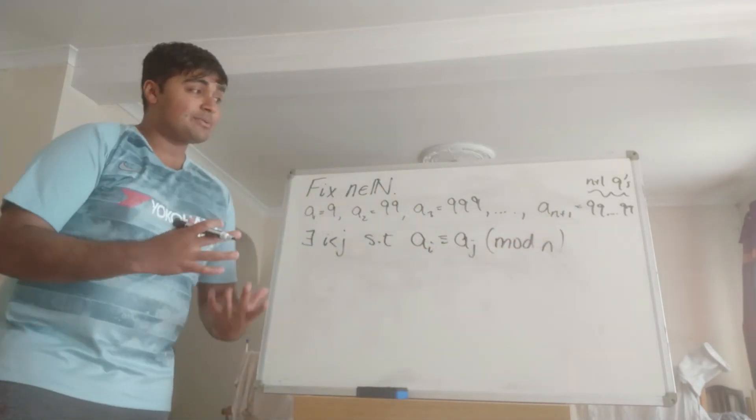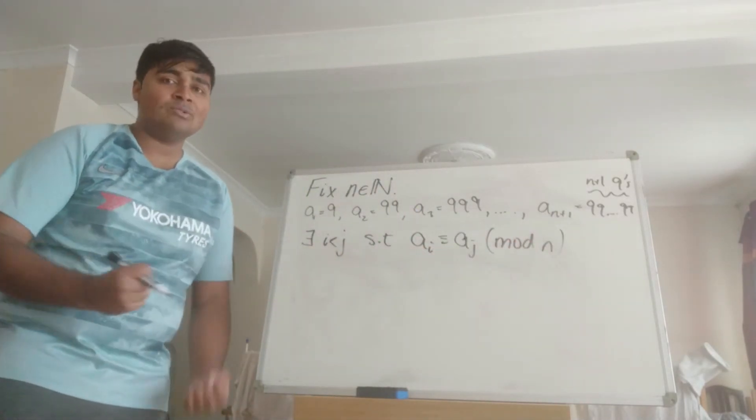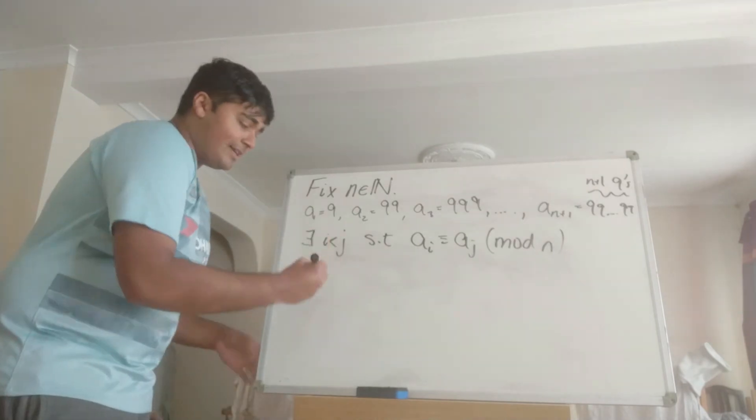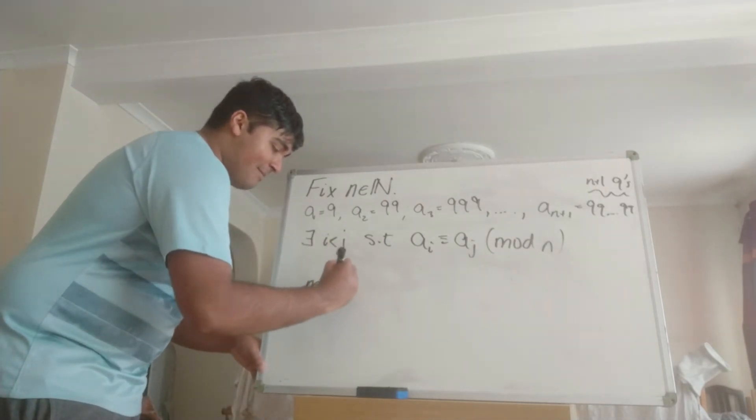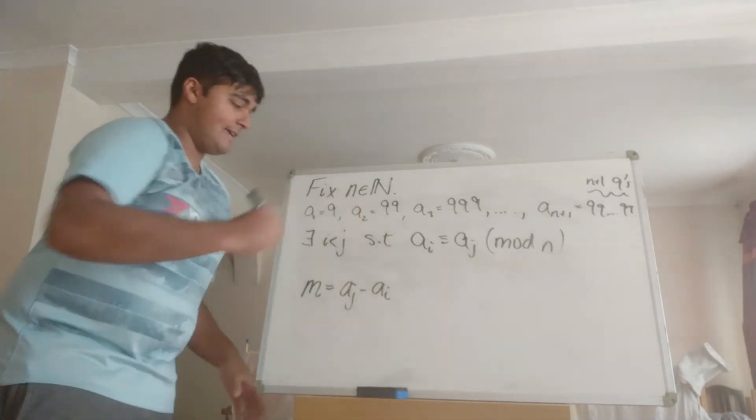Well now from this, we can actually just go ahead and write down the value of m, or a value of m. I'm going to say m is equal to aj minus ai.